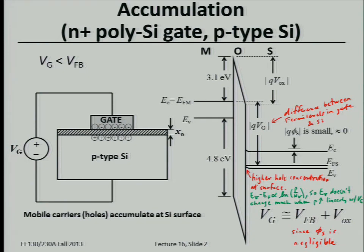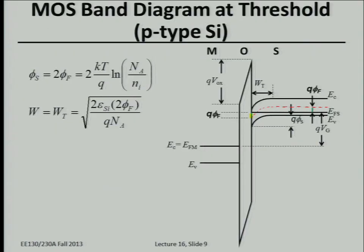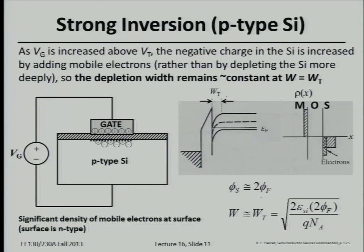So EF minus EV only changes logarithmically — not very much. Once you have a relatively high concentration of holes at the surface, the Fermi level and valence band edge won't move much, and the energy band bending won't change much to move EV even closer to EF over a reasonable range of gate voltages. The same assumption applies once inversion is reached.